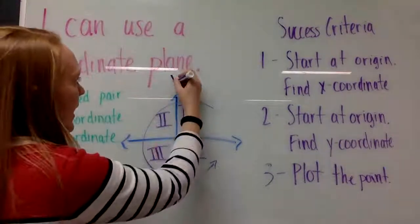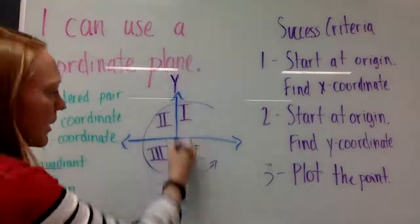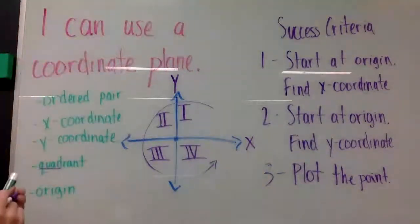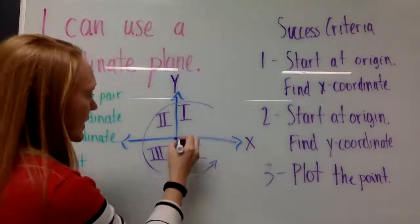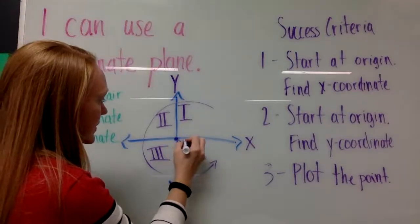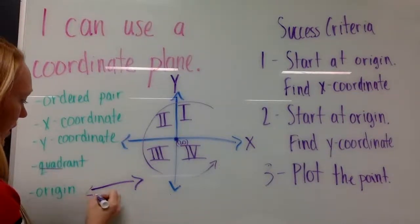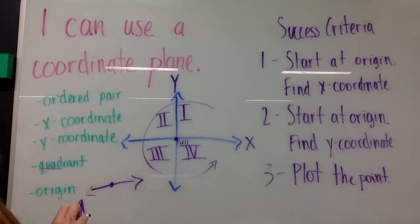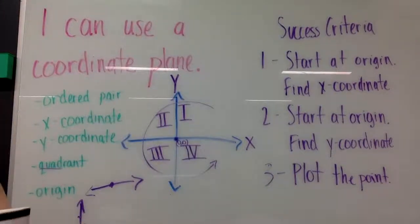On our coordinate plane we have two number lines. We have the y-axis — I like to draw my y with a tail straight up and down, which reminds me it goes straight up and down. We also have the x-axis. The point where the two number lines join, where they intersect, is point (0, 0), and that's also called the origin. It's still called the origin when you have all four quadrants.